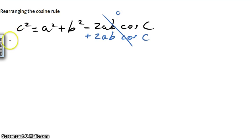So I need to add it to the left side as well to keep that balance of your equation. So I've now got 2ab cosine c plus c squared equals a squared plus b squared.